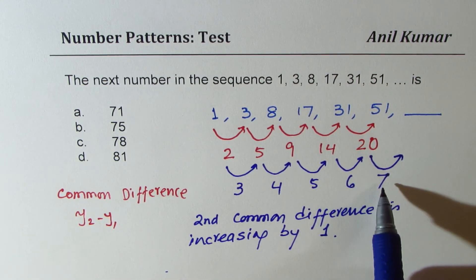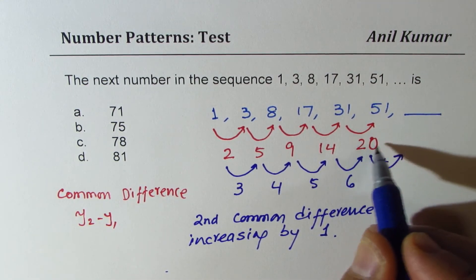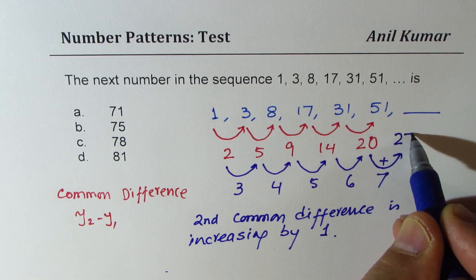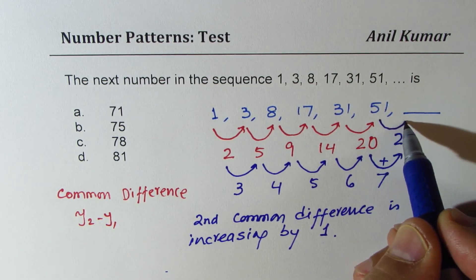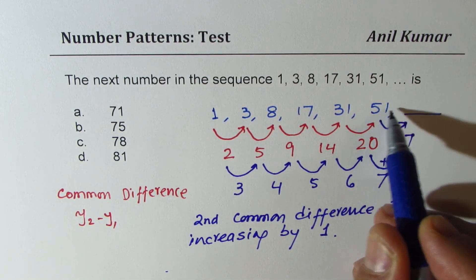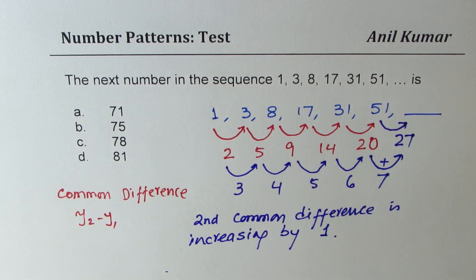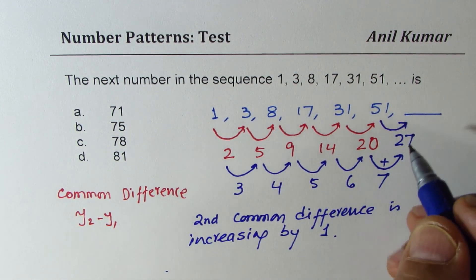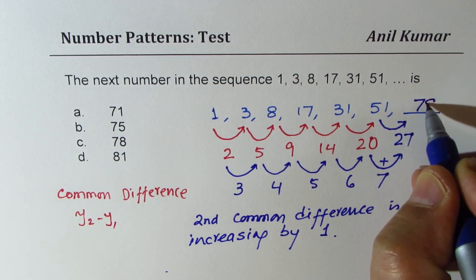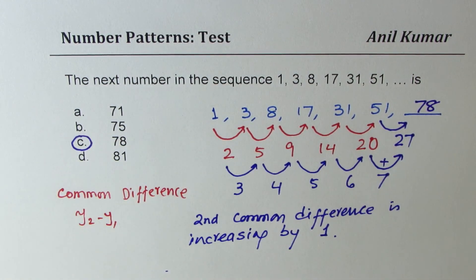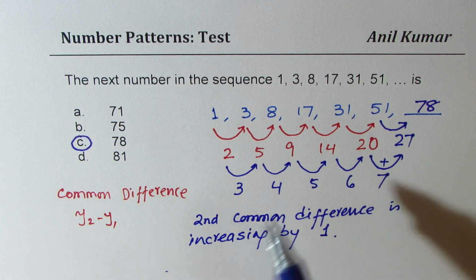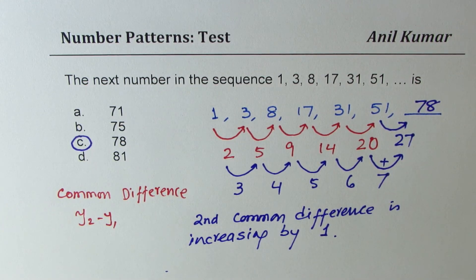Knowing this, the next second-level difference should be 7. Adding 7 to 20 gives us 27, and then adding 27 to 51 gives us the next number, which is 78. So option C is the correct answer.